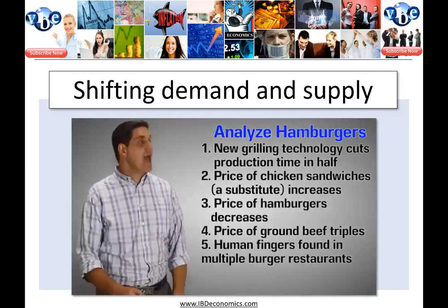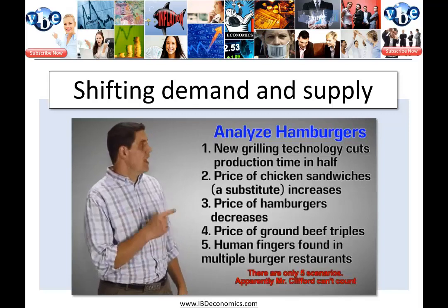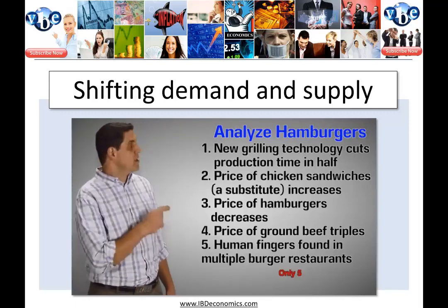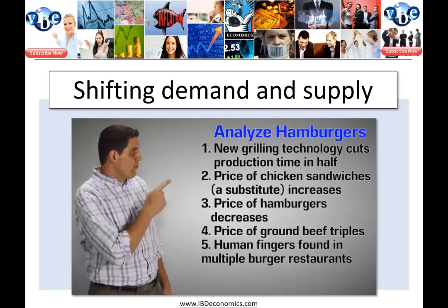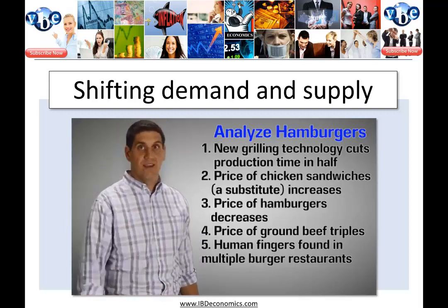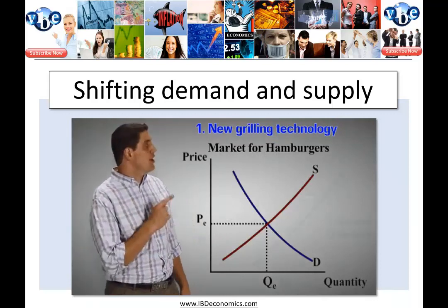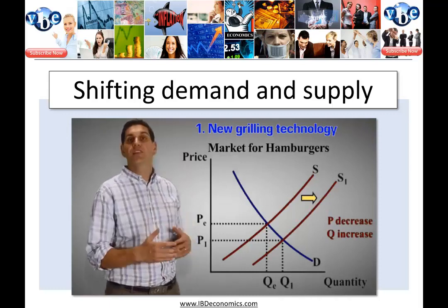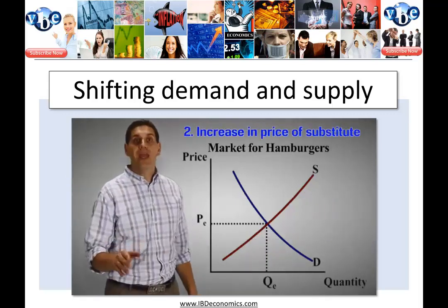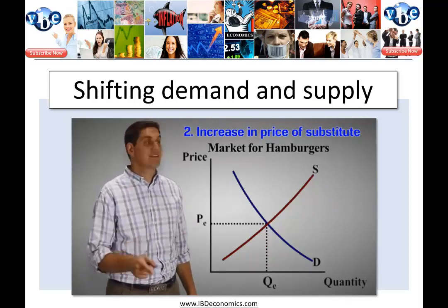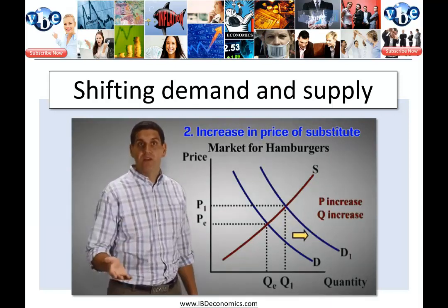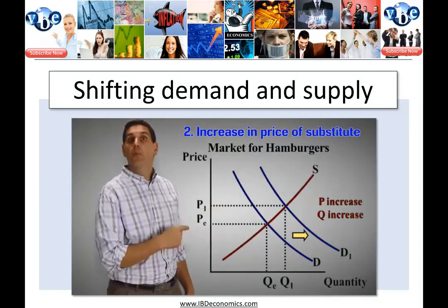Now it's time for you to practice. I have six scenarios for hamburgers. Your job is to figure out if it's going to be an increase or a decrease in demand or supply, what shifter it is, and what happens to price and quantity for each scenario. For the first one, new grilling technology would cause supply to shift to the right or increase — technology is a shifter — so the price will decrease and the quantity is going to increase. For number two, an increase in the price of chicken sandwiches, a substitute, is going to cause the demand for hamburgers to increase. The price of related goods — substitutes and complements — is a shifter of demand. If chicken sandwiches are more expensive, people are going to buy more hamburgers, so the demand shifts right: price goes up and quantity goes up.